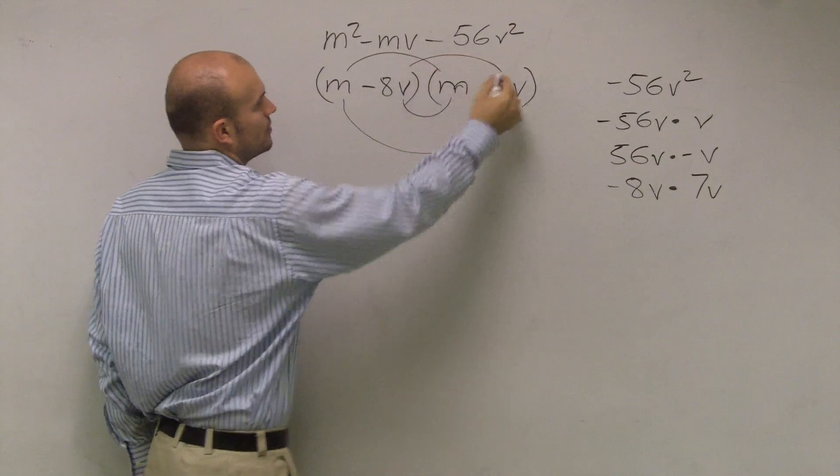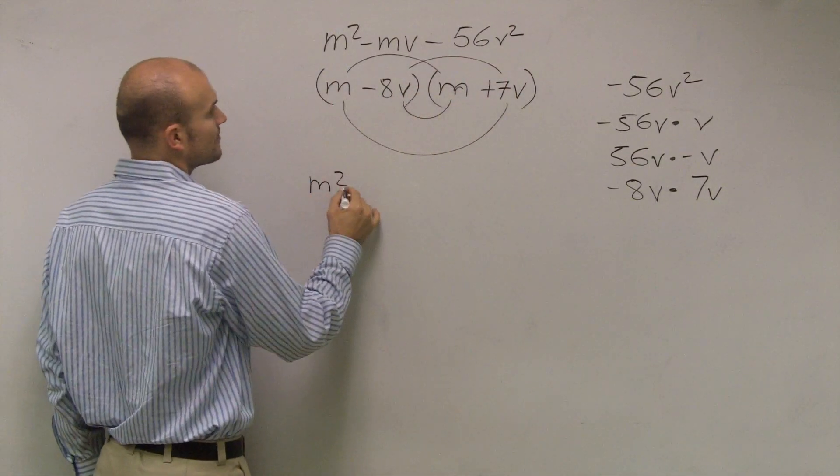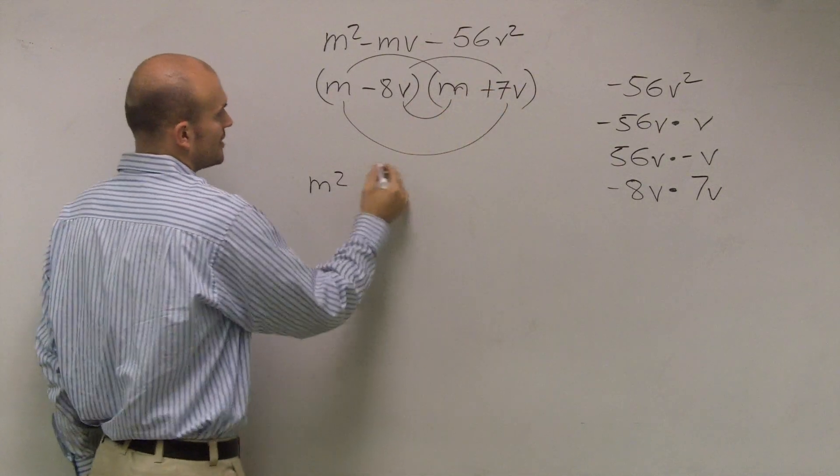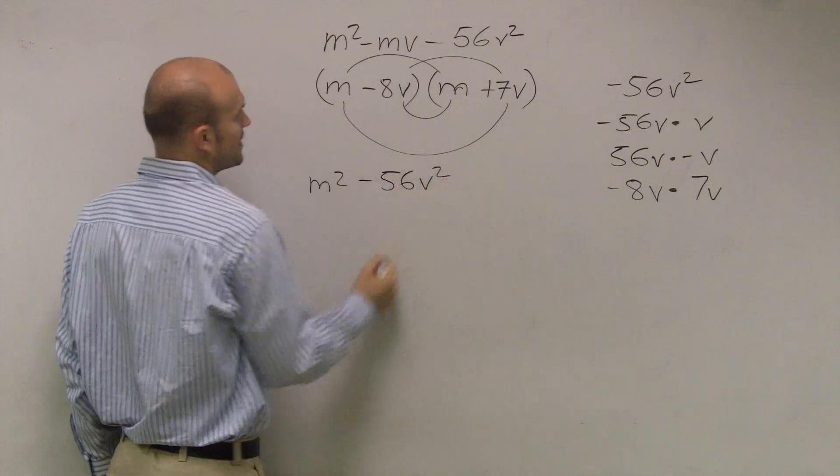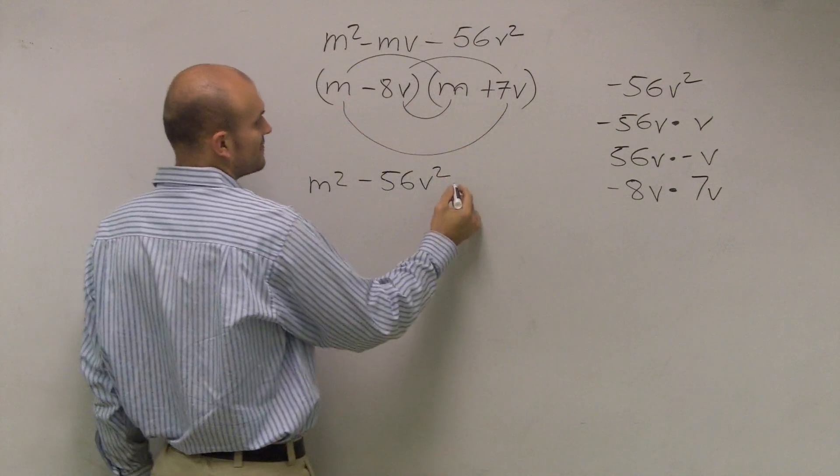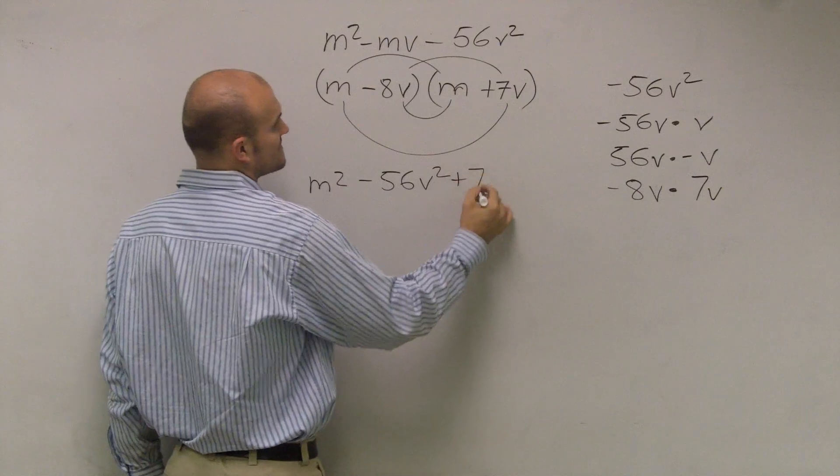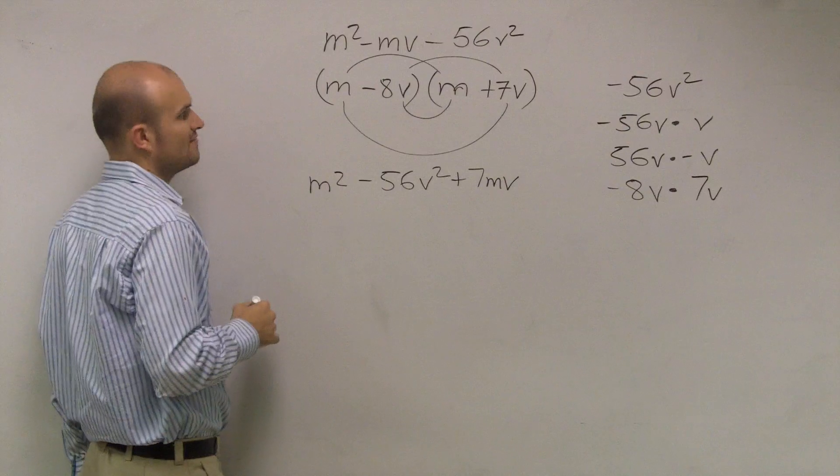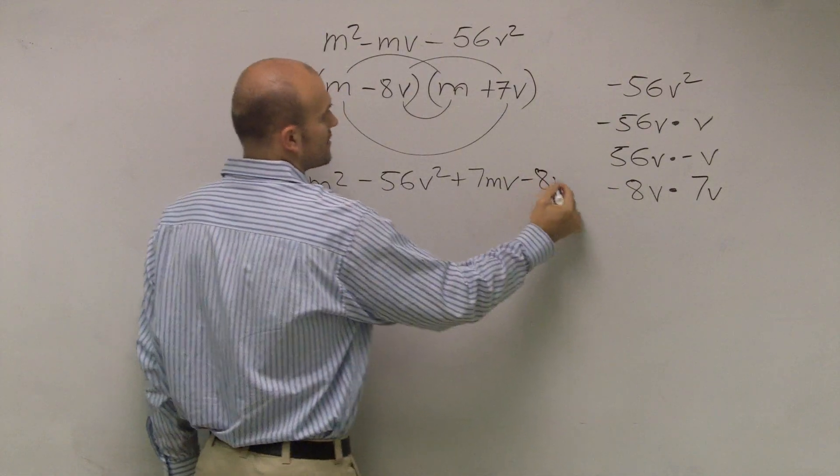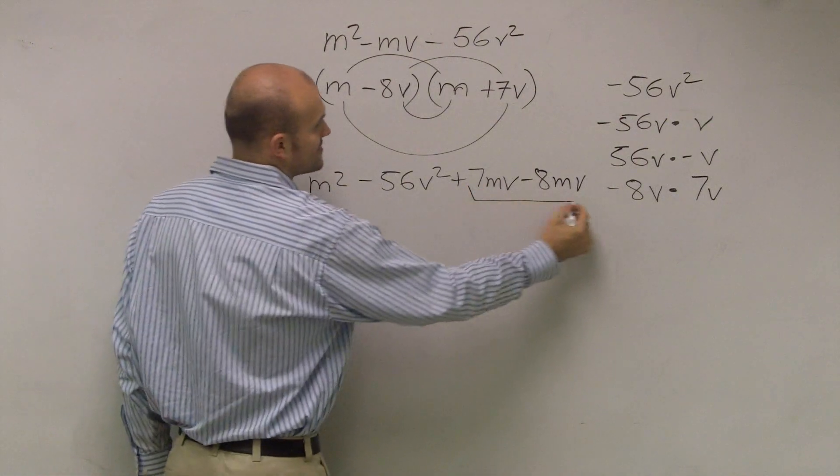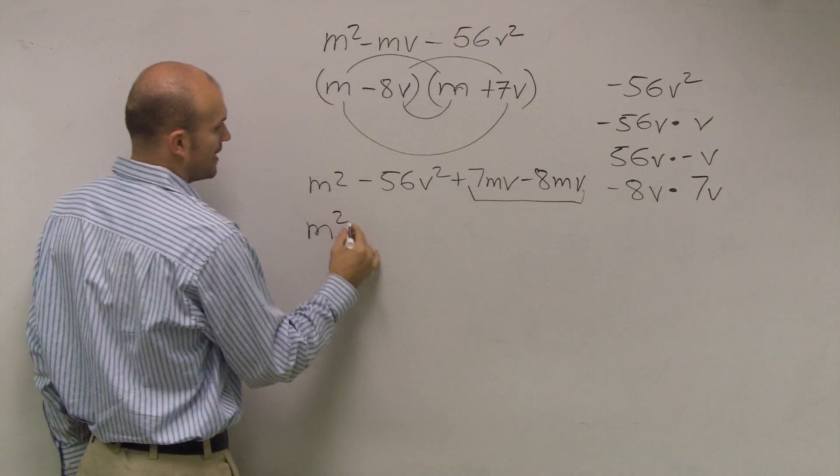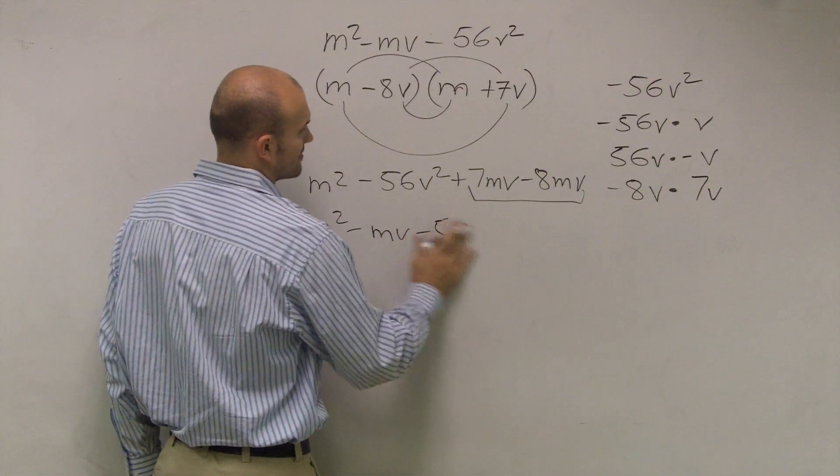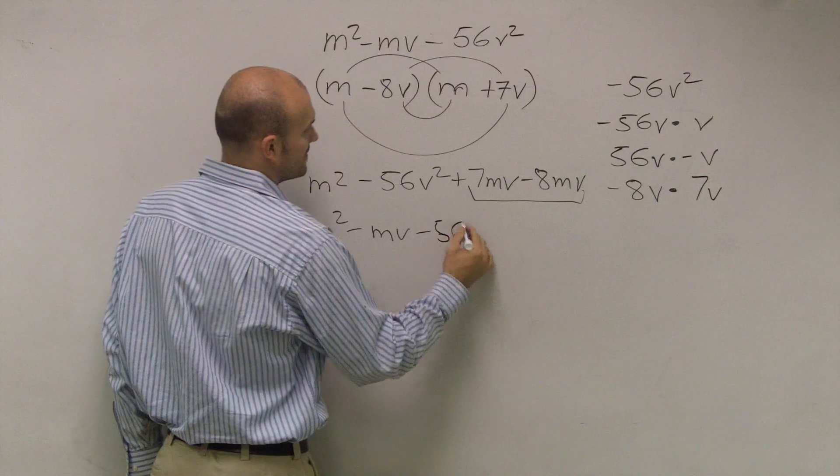All right. Now, if I actually wanted to do my FOIL, what you would notice, m times m is m squared. Negative 8 times positive 7 is going to be a negative 56v squared. m times 7v is going to be a positive 7mv. And negative 8v times m is going to be a negative 8. I'm going to write them as the same way. Okay? These are the same terms. So I combine them. m squared minus mv minus 56v squared.